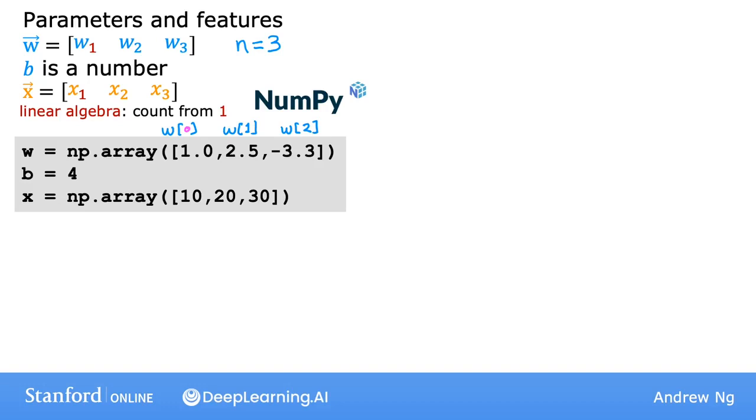So the indexing here goes from 0, 1 to 2 rather than 1, 2 to 3. Similarly to access individual features of x you would use x[0], x[1], and x[2]. Many programming languages including Python start counting from zero rather than one.